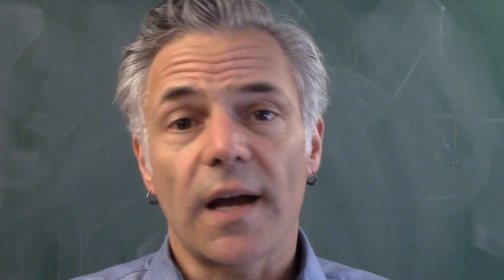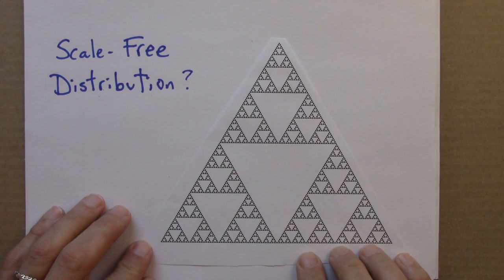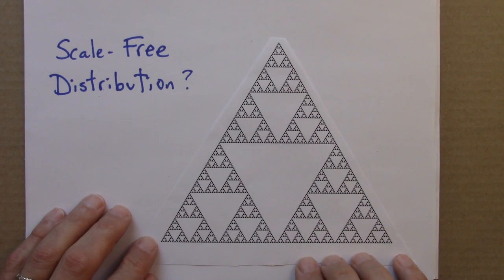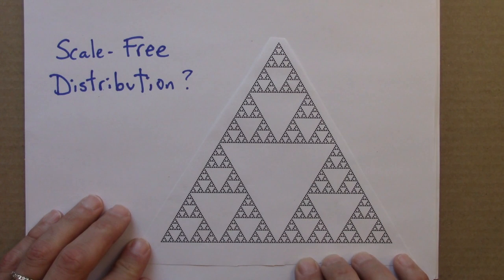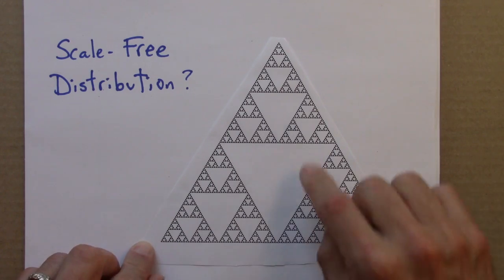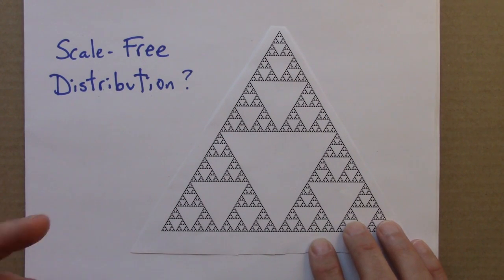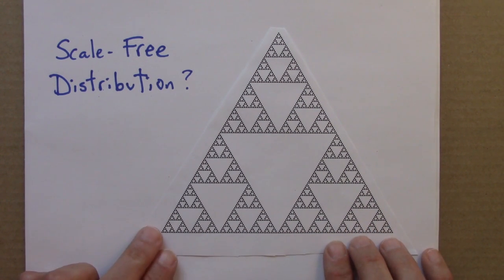Now it turns out that self-similarity applies to objects that aren't like ferns. It applies to things that aren't objects at all — to distributions. And in order to illustrate that, I'm going to need to use a picture really quickly. Here's a fractal known as the Sierpinski Triangle. Suppose I asked you to describe the distribution of triangles in this shape — how many different triangles there were of different sizes. Well, the first thing you might notice is that there are triangles of lots and lots of different sizes. There's one big triangle, there are some smaller triangles, and it's triangles all the way down — triangles made up of triangles made up of triangles.